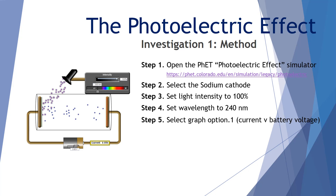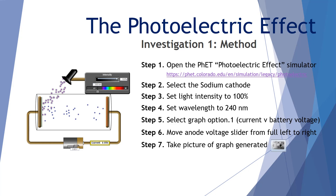Step five: select graph option one, that is the current versus battery voltage. Step six: move the anode voltage slider from full left to right. Step seven: take a picture of the graph generated with the picture tool. Step eight: repeat steps one to seven for light intensities of 80, 60, 40, and 20% respectively.